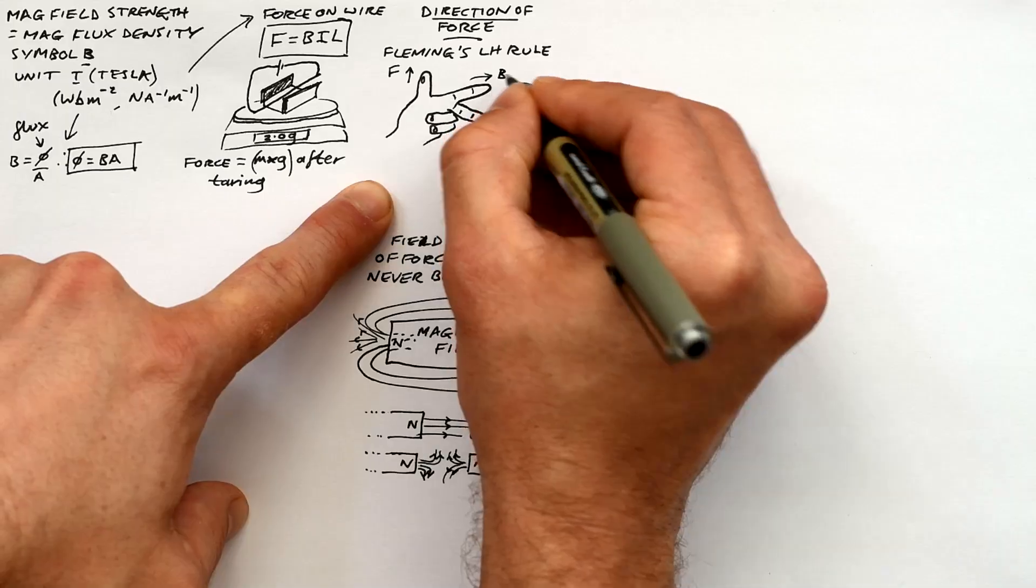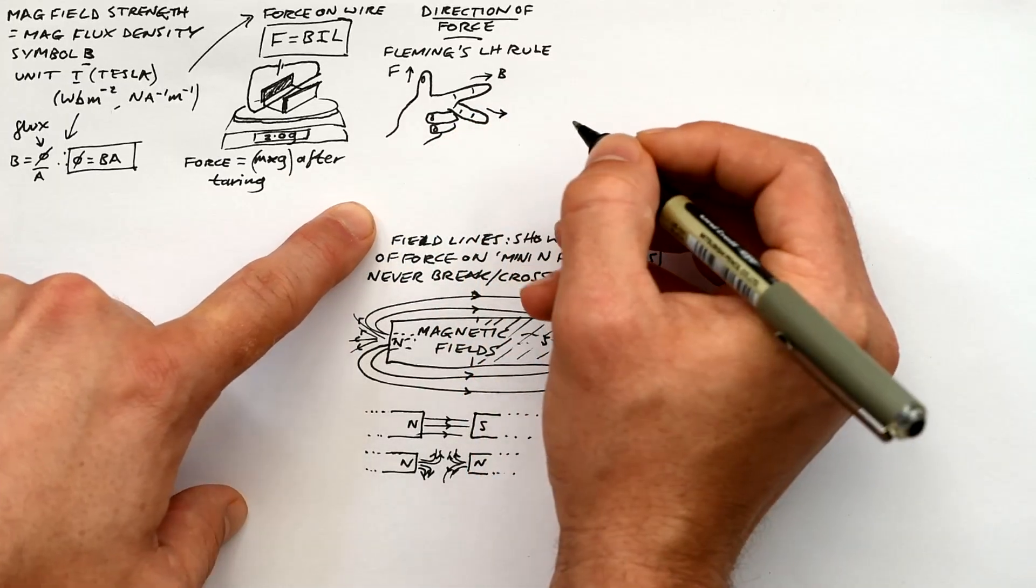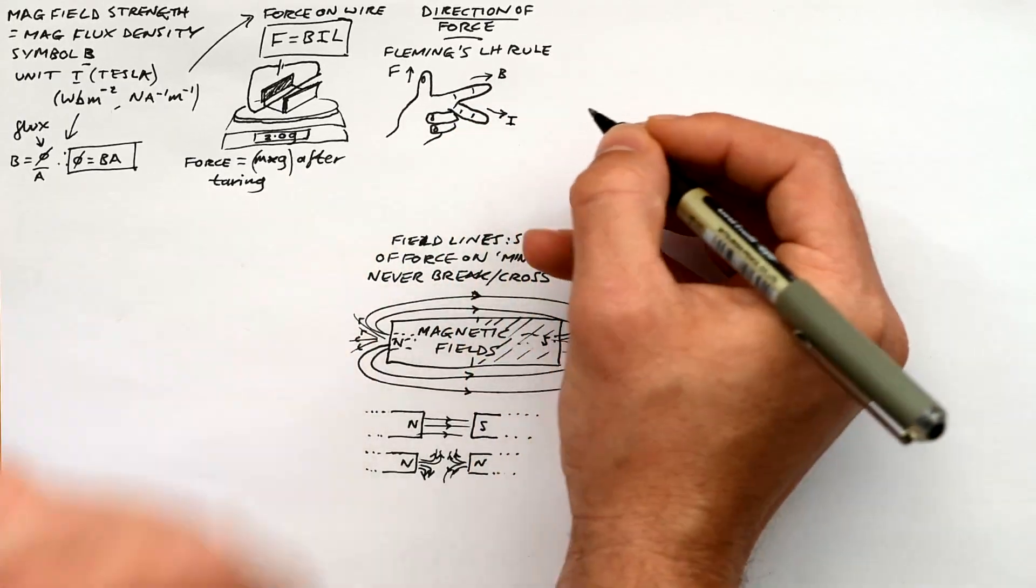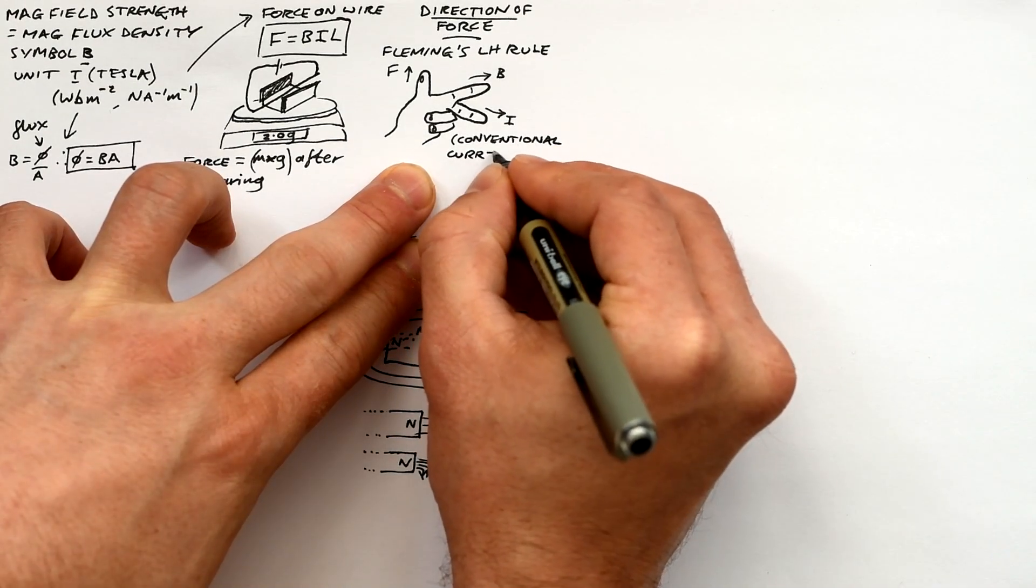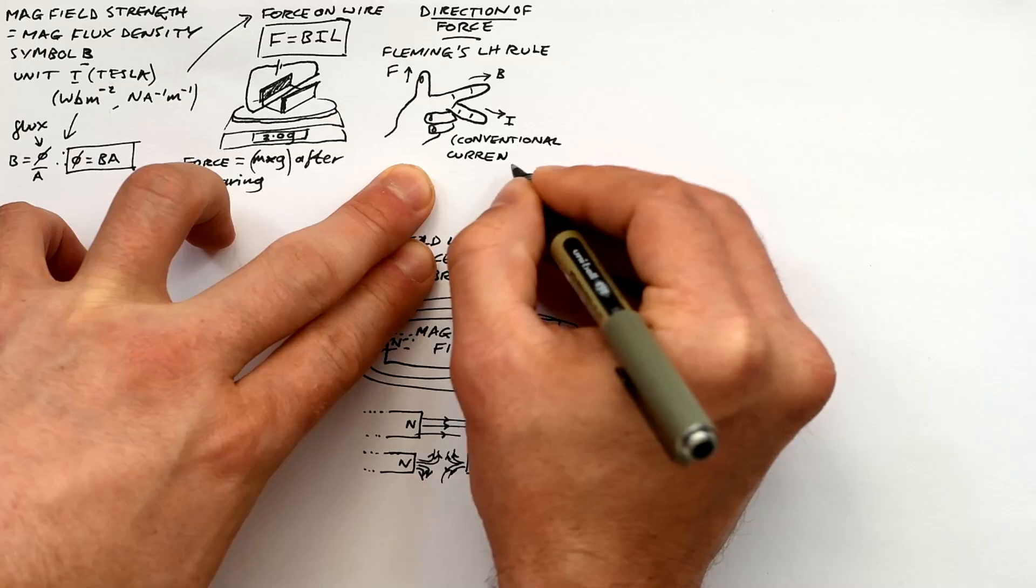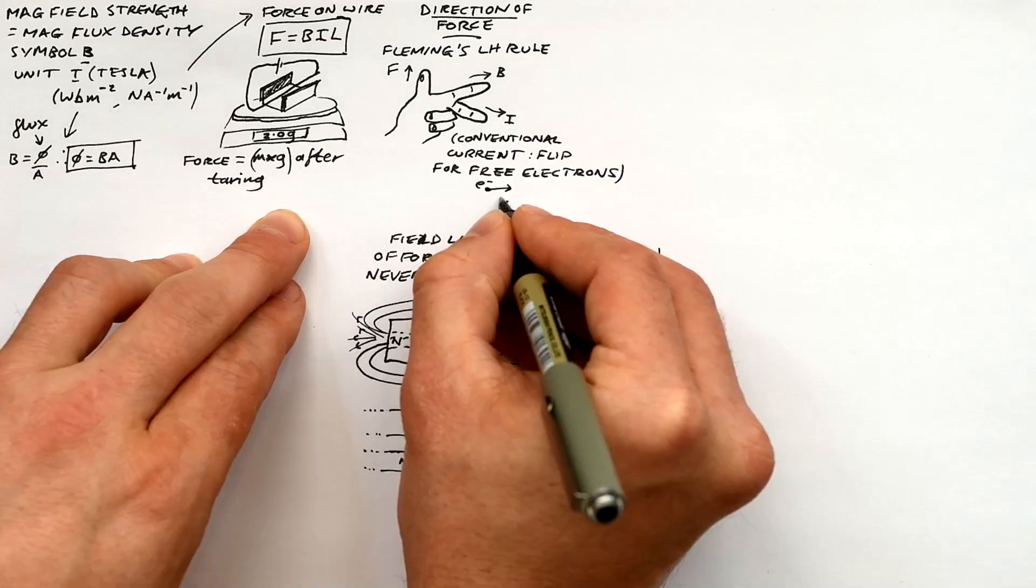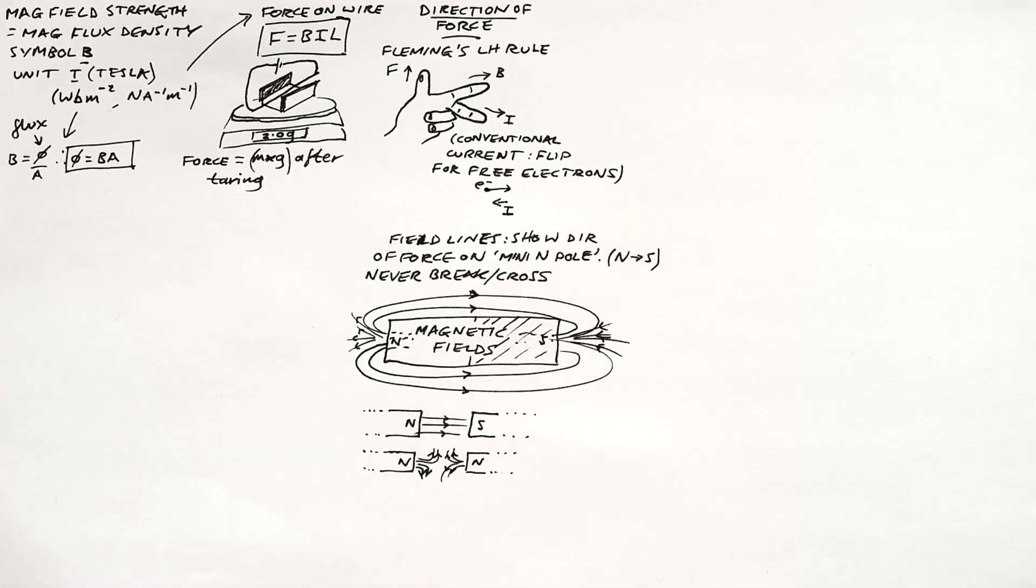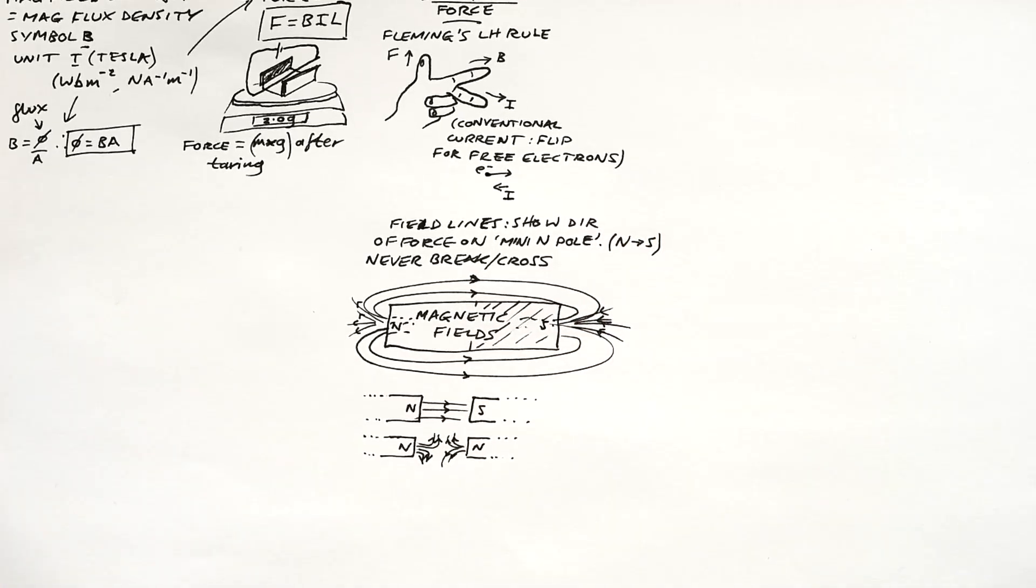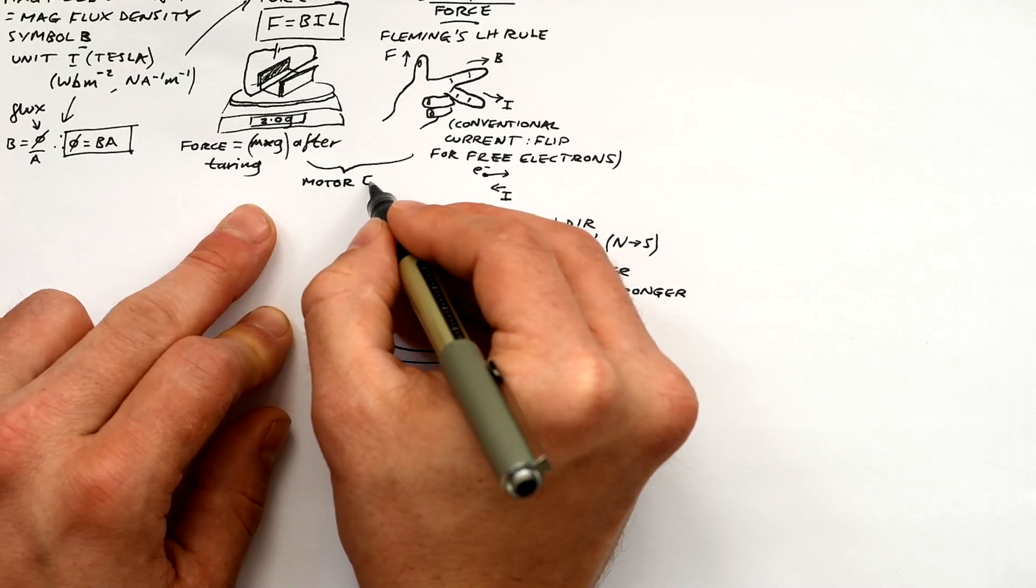It's because F-bill, thumb is force, first finger is field, second finger is current and they're all 90 degrees to each other. The current in this is conventional current. For GCSE that doesn't really mean anything, but at A-level you need to know that when it comes to free moving charged particles, this second finger is in the right direction for protons and other positive charges moving, but we need to flip it for negative charges like electrons.